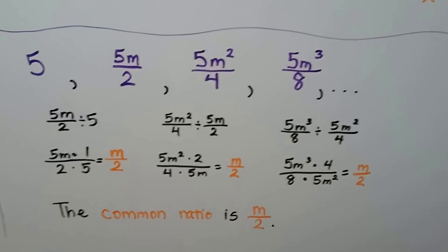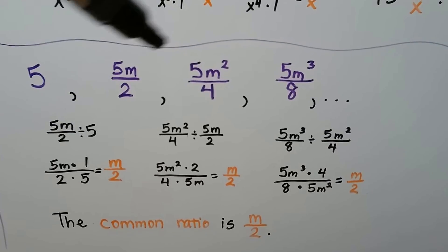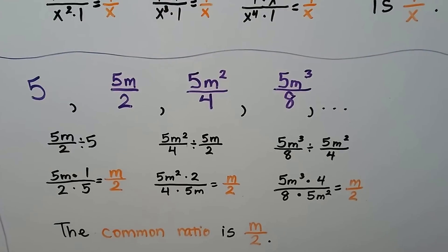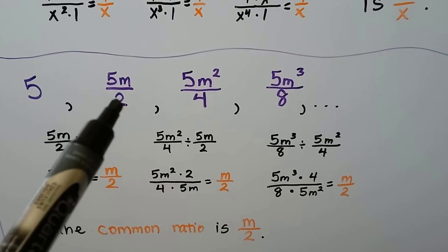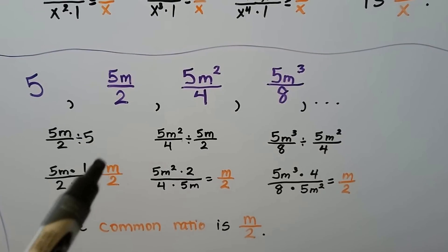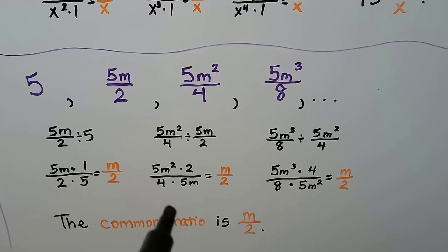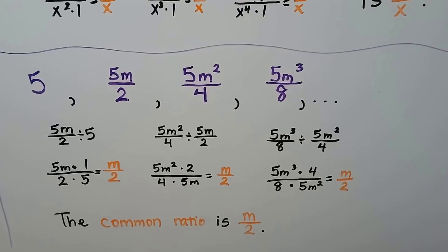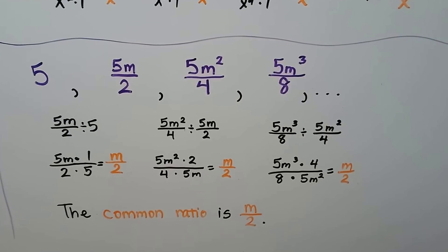This one looks a little different. Here we have 5, then we have the quotient of 5m and 2 and 5m squared and 4 and 5m cubed and 8. So we're doing the quotient of 5m and 2 divided by 5. That's going to give us the quotient of m and 2. We get m and 2 again, m and 2 again. So the common ratio is the quotient of m and 2, m divided by 2.